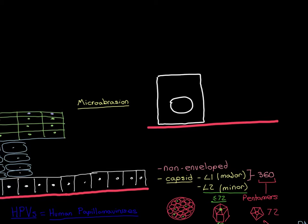Let's put the human papillomavirus into the picture. Here comes the HPV — the capsid and the genome. It's going to approach this basal cell. The virus will be able to gain access to the basal cells through the wound created by the microabrasion.